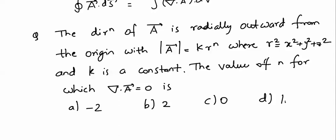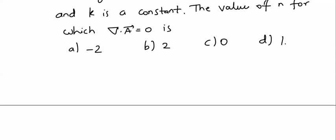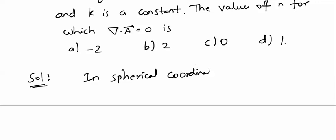Reading the question carefully: the vector A is radially outward from the origin and its magnitude is given. Whenever you get the term 'radially outward' with respect to the origin, you must think about the spherical coordinate system. In spherical coordinates, since the direction is radially outward, the unit vector is âr. So A = k·r^n·âr.